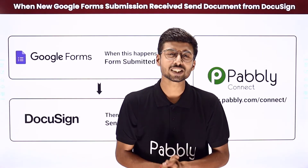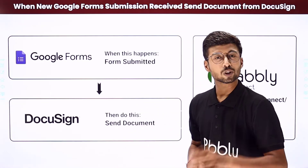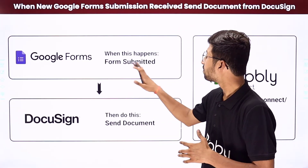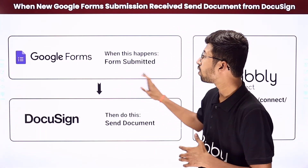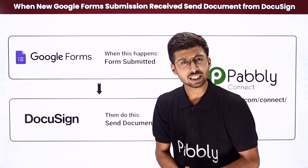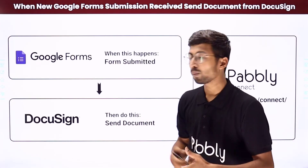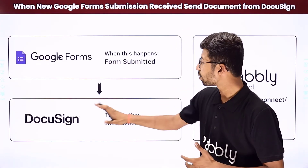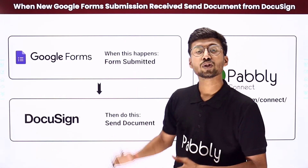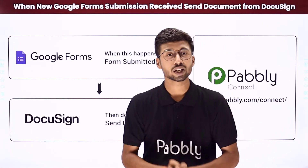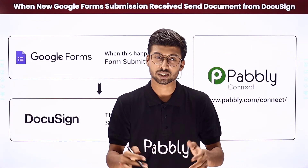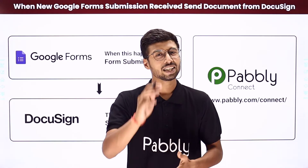So in this video, I came up with an awesome automation by which whenever we receive a new form submission in Google Forms, automatically and instantly, a template document from our DocuSign account will be automatically sent to that very same user who submitted the form for signature. Interesting, right?